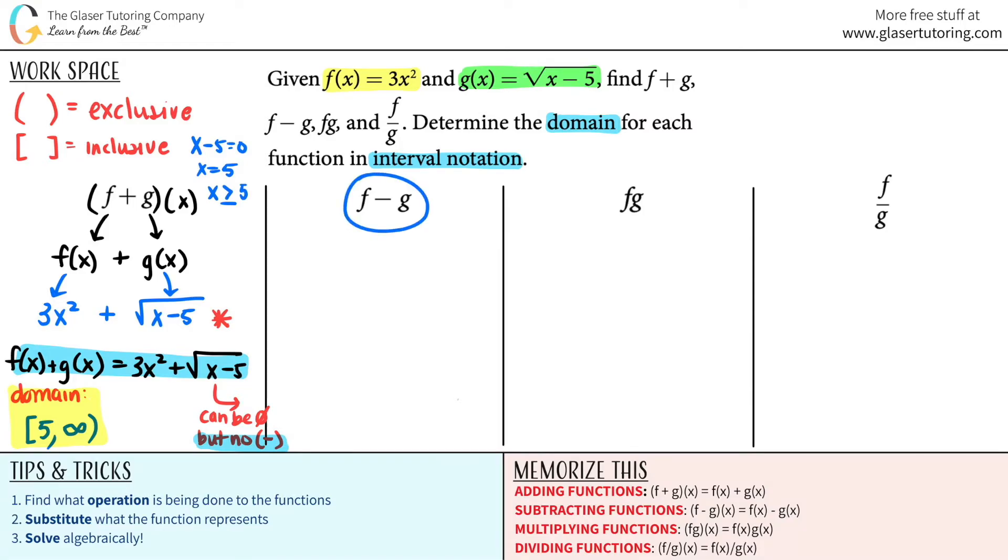Next one. This is subtraction. f minus g of x. Well, this is the same thing as saying f of x minus g of x. Now we clearly know what f of x is and what g of x is, so I'm just going to be subtracting them. f of x was three x squared minus rad x minus five. I'm going to put a star here because this is where I'm going to do my domain off of. And now I'm just going to try to simplify. I can't really simplify this. So I'm just going to leave it as three x squared minus rad x minus five. And that is the new function.